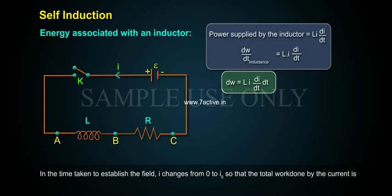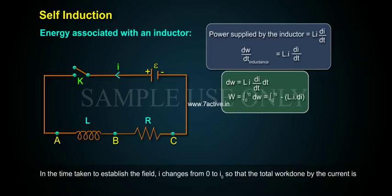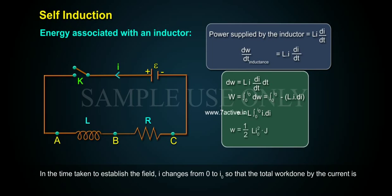that the total work done by the current is W equals integration from zero to I naught of DT equals integration from zero to I naught of LI DI. W equals L integration from zero to I naught of I DI equals 1 by 2 L I naught squared joules.